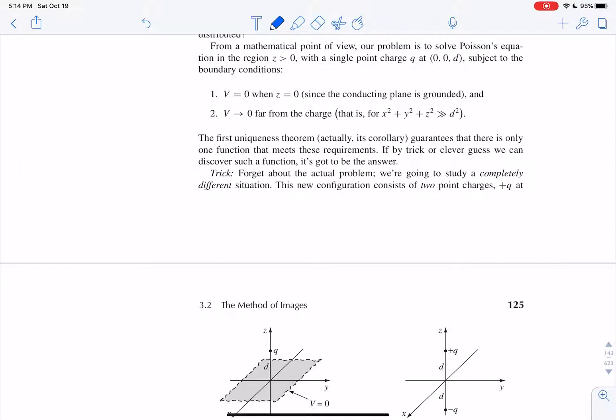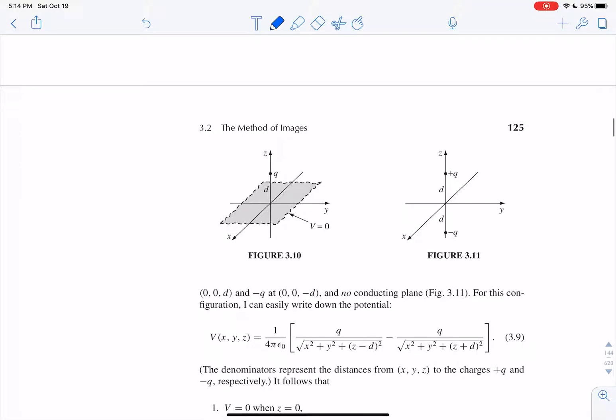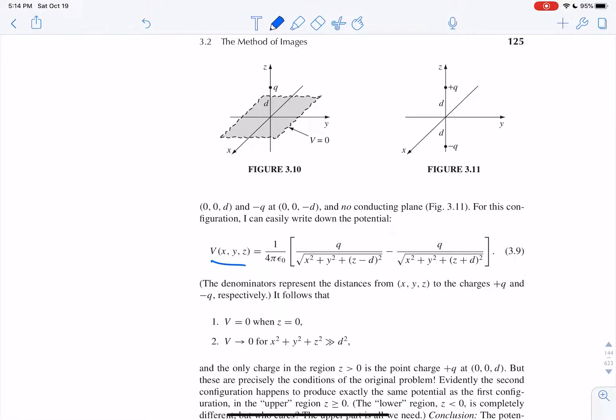And so that's what the image method of images is. It's to create a simpler problem to solve with the same boundary conditions and get the same solution. So rather than having an infinite conducting plane with a charge above it, imagine two charges, plus q and minus q, separated by a distance 2d, and it sets up the same potential.